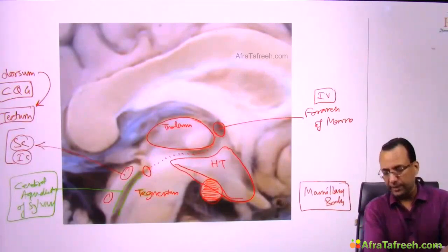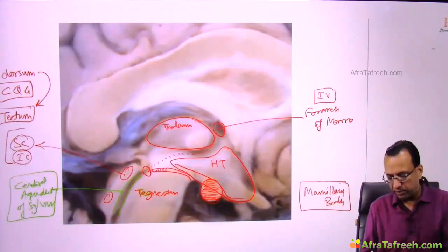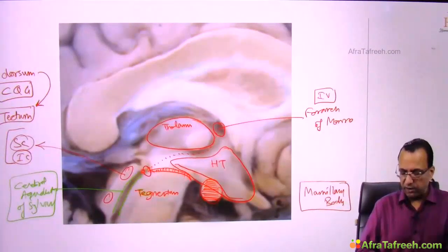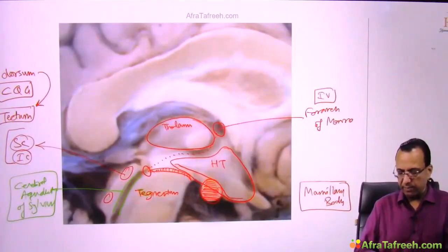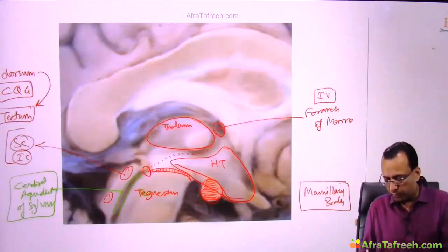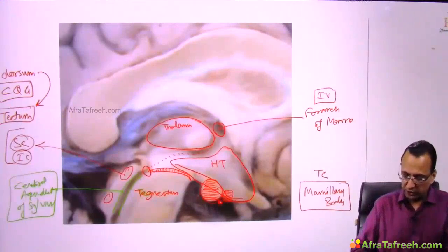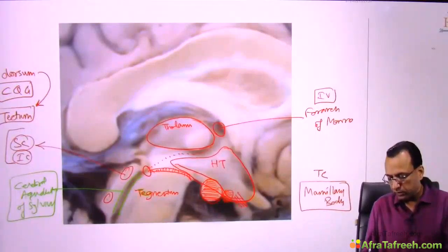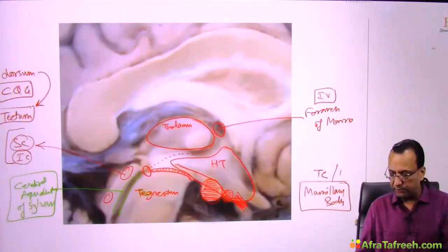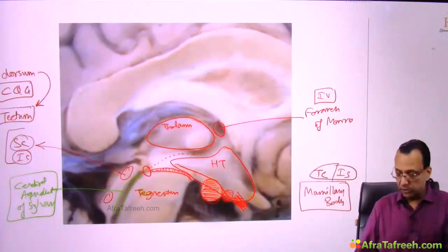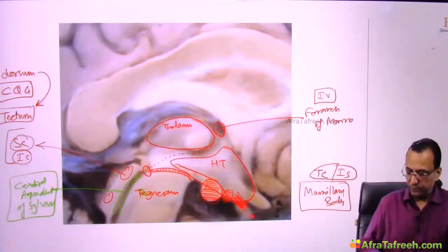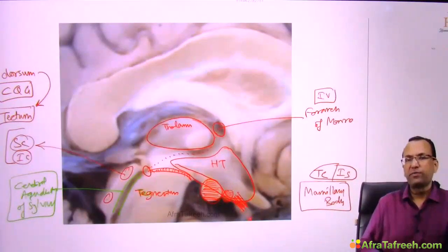At the floor of the third ventricle, the tegmentum part of the midbrain is also present. There is also the tuber cinereum, and there is the infundibular stalk. The infundibular stalk connects to the neurohypophysis — the posterior pituitary — which is a downward extension of the diencephalon part of the brain.